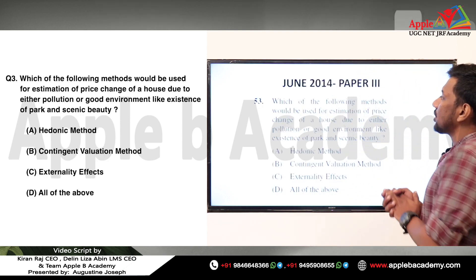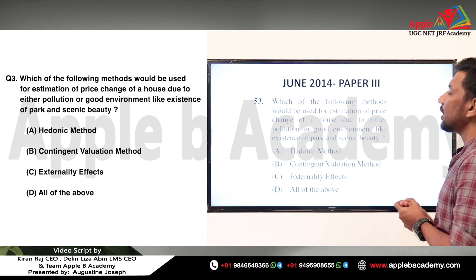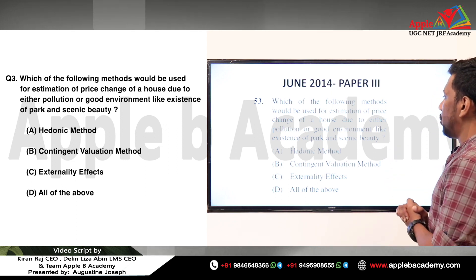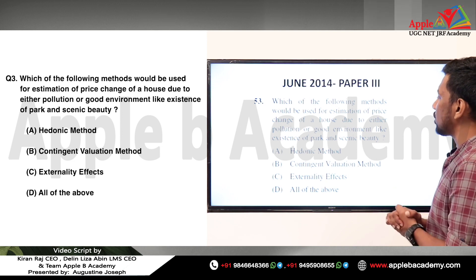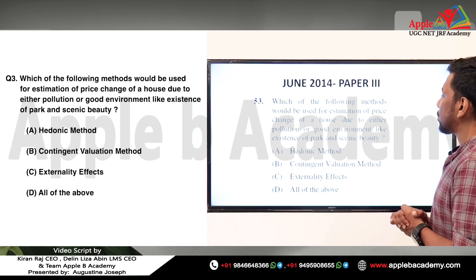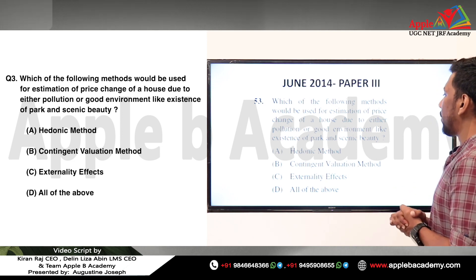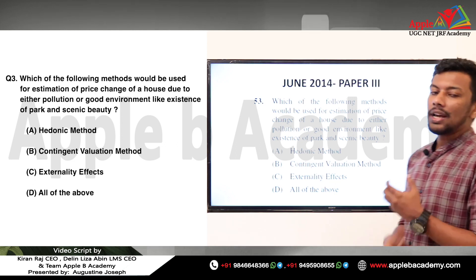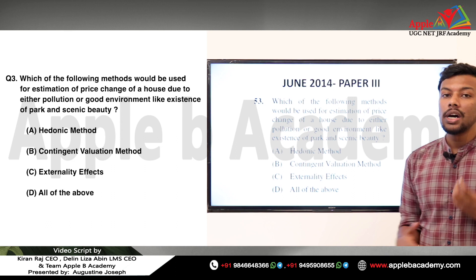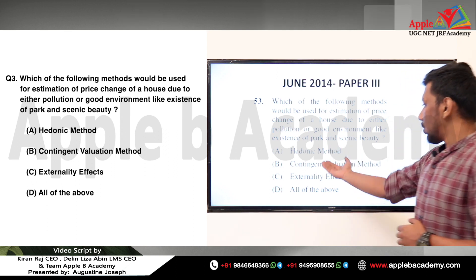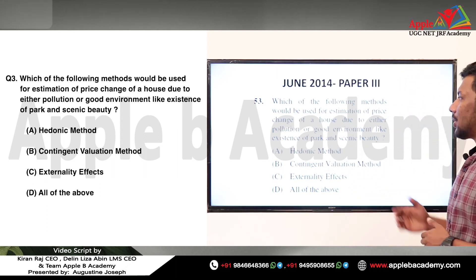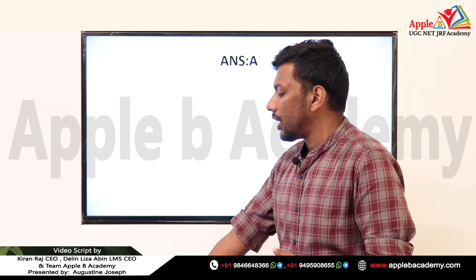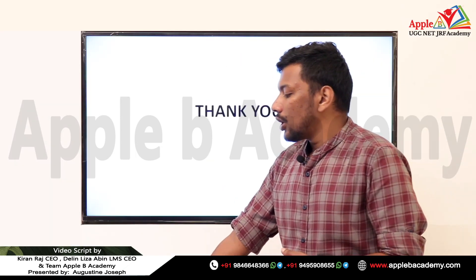This question was asked in 2014 in Paper 3: 'Which of the following methods would be used for estimation of price change of a house due to either production or good environment, like the existence of a park and scenic beauty?' Since variation in house prices due to environmental factors is determined by the hedonic price method, the correct answer is option A — the hedonic price method.